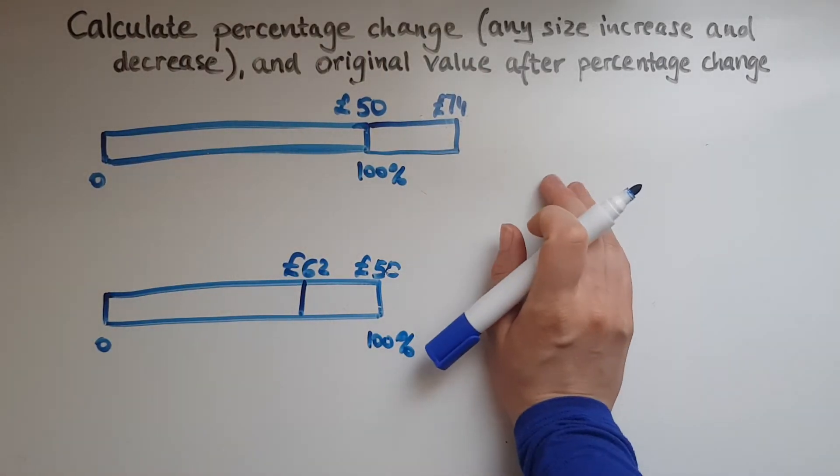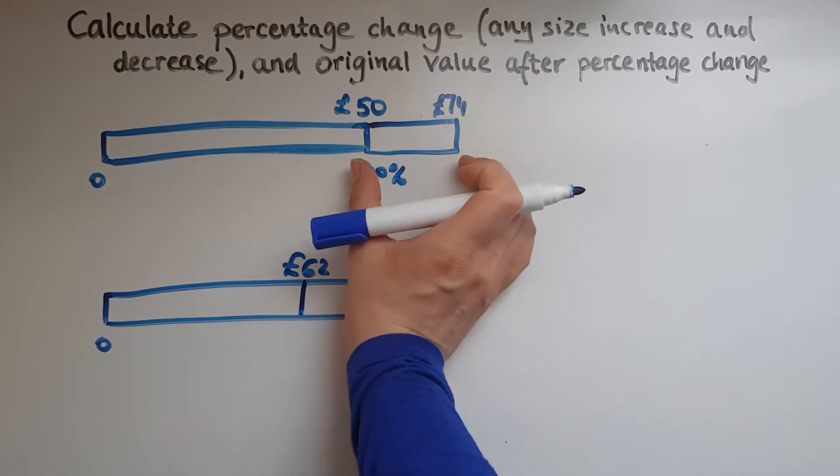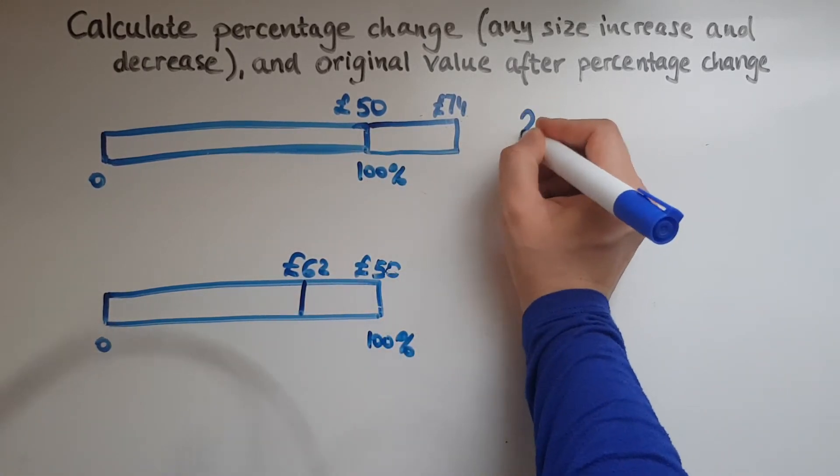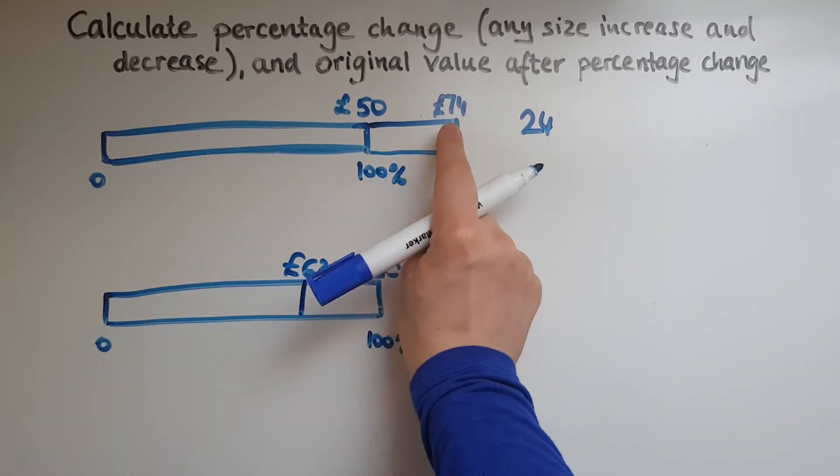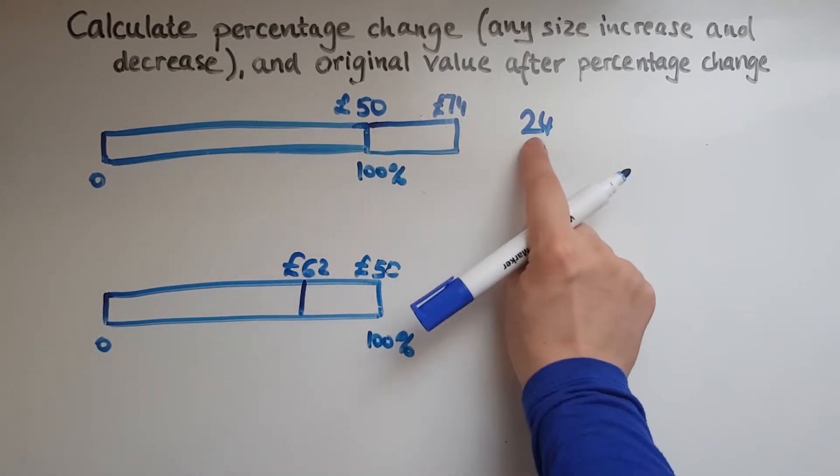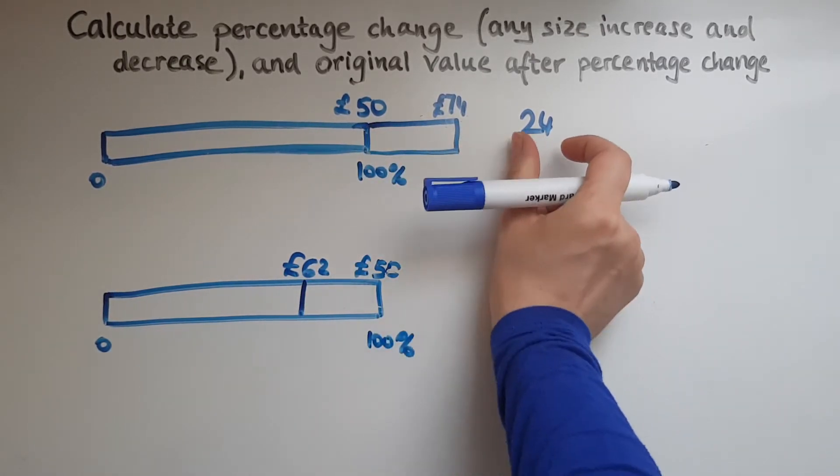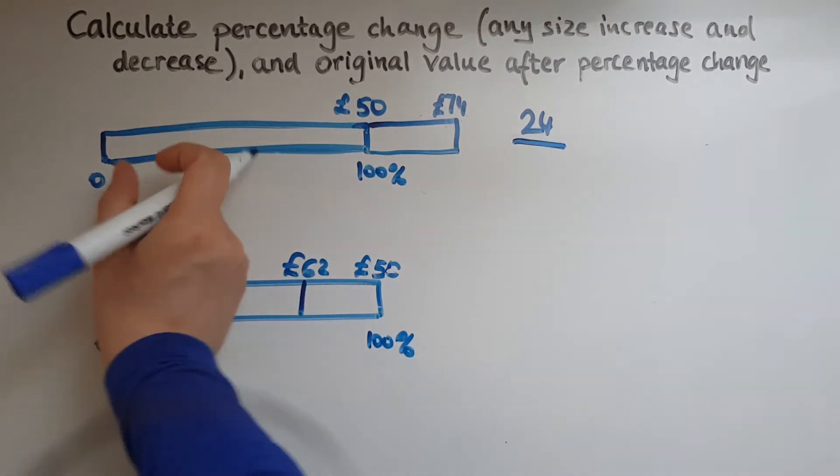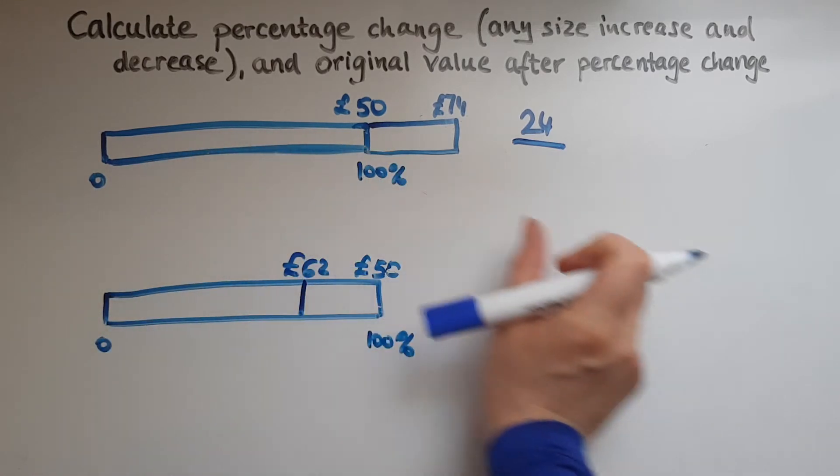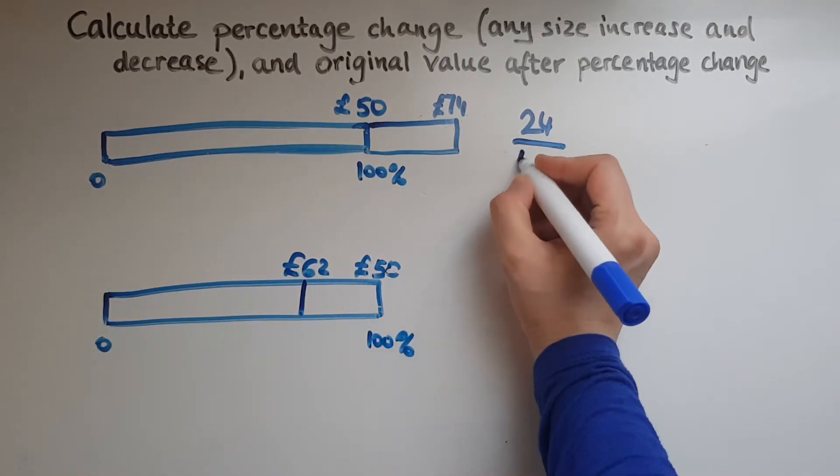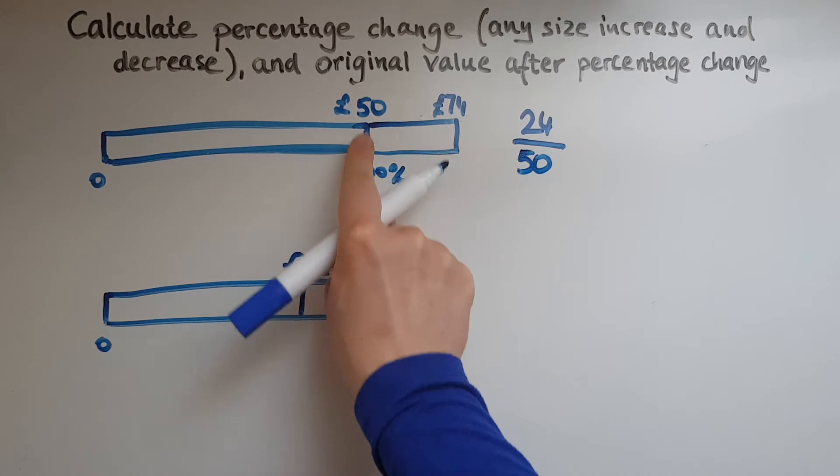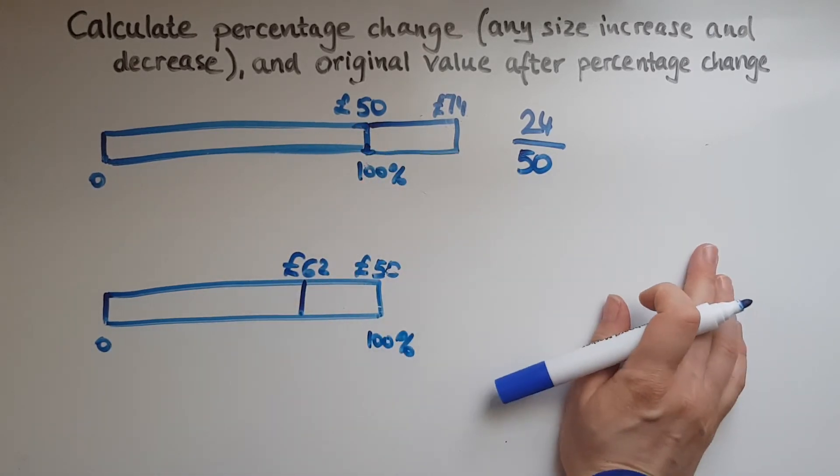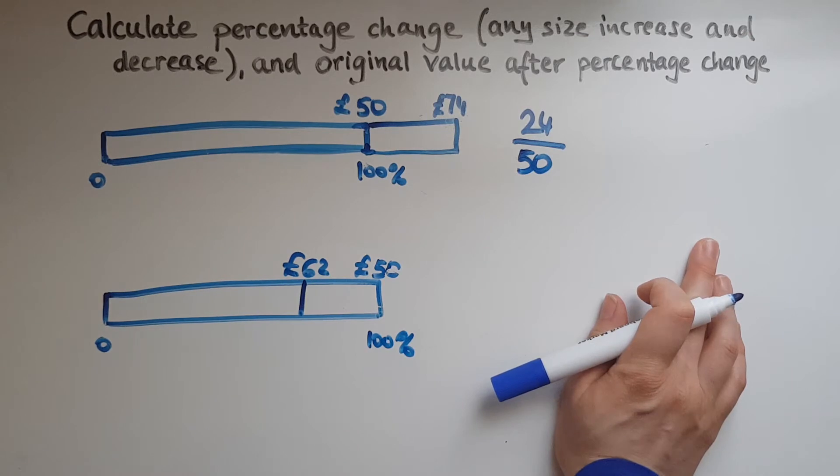So what do I mean by that? This is 24 pounds extra because 74 take away 50 gives me 24. So it is 24 extra which I could have had here, there in the middle or at the end. So it's 24 out of 50 because that's the original amount. That's the 100% amount as well.